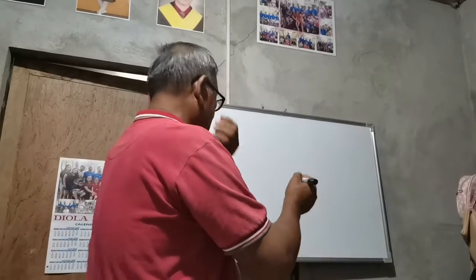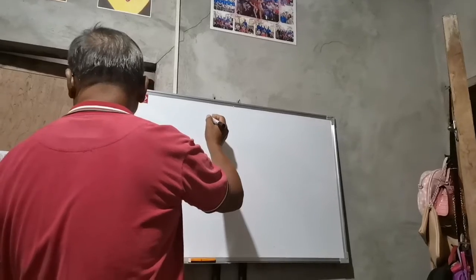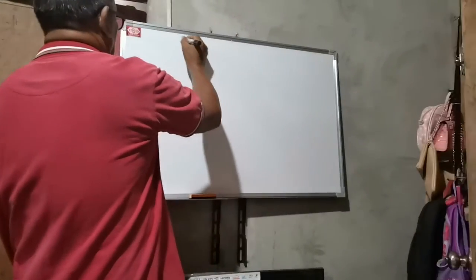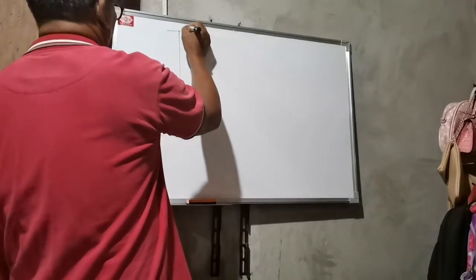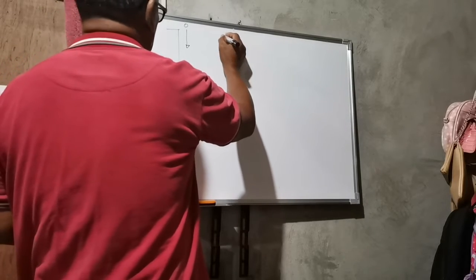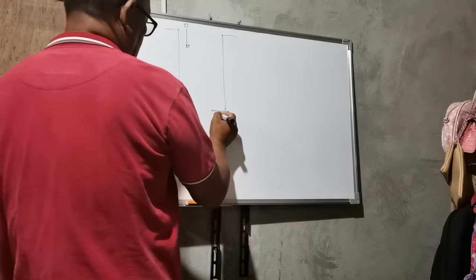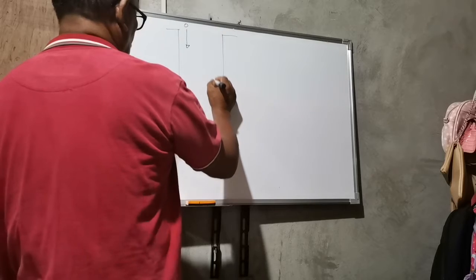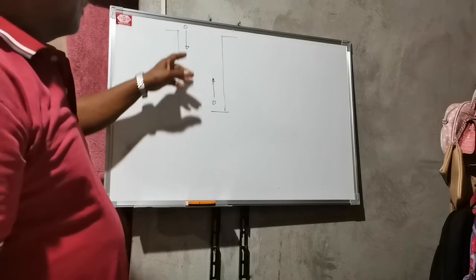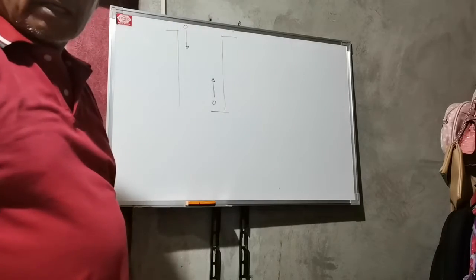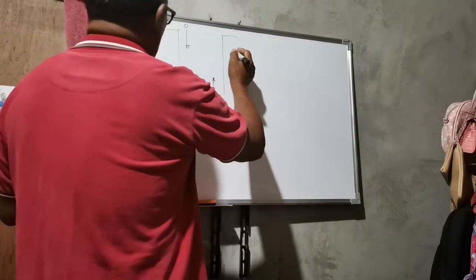Our subject for today is vertical motion. The topics that will be taken up are falling bodies. We are going to study the motion of falling bodies — downward and upward motion. For example, if you are at a cliff and drop an object downward, or at the bottom of a cliff throwing an object upward, we will study these two motions: going down and going up.